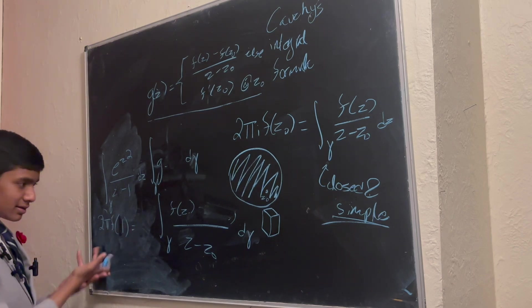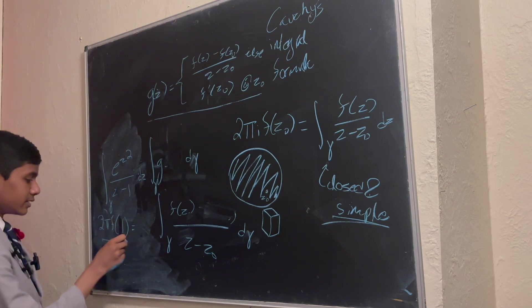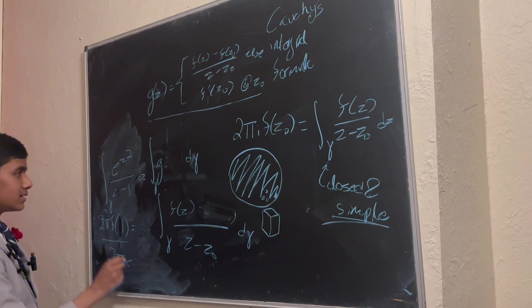That's stupid, right? But, I mean, what happens when you take this? You get 2 pi i e to the minus 1 squared, which is just e to the minus 1.